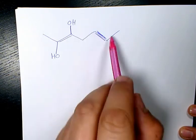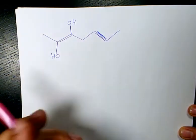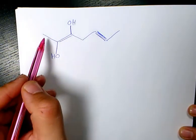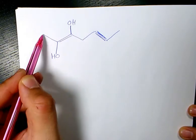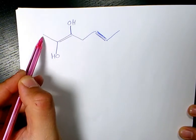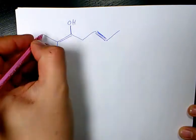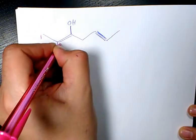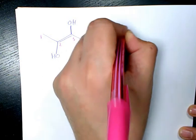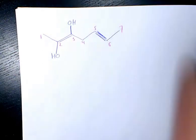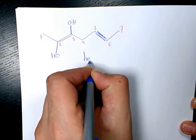Now I need to start numbering these carbons. We start from this side because if you start from this side, the hydroxyl group gets the smallest number. So we have one, two, three, four, five, six, seven. Therefore I have hept.